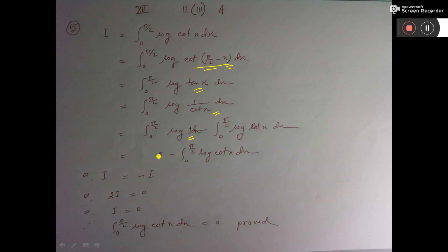Now log 1 is 0, so this is only left. And this one we have got, we have considered this is i. So you put here i.